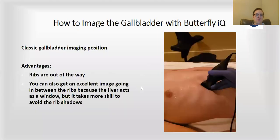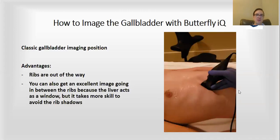The first step is how to image the gallbladder by finding the correct position. The classic position that you're going to be using for a gallbladder ultrasound scan is right there below the ribs, as seen in this video right here.